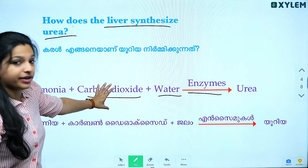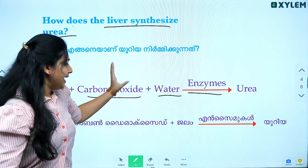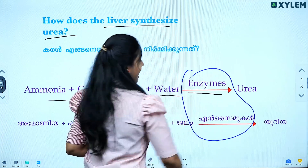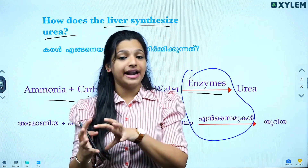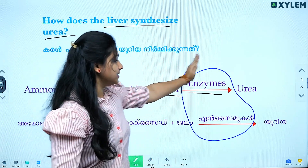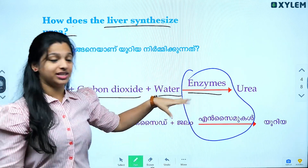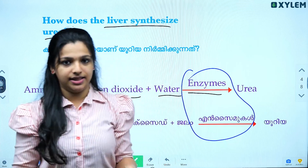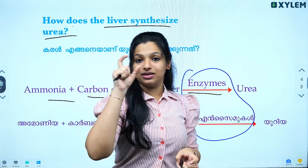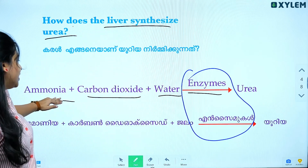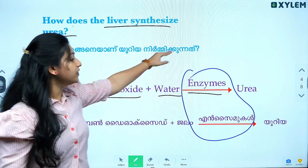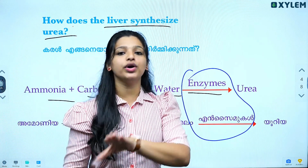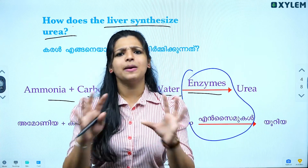One of the things you do is add carbon dioxide and water to ammonia. Carbon dioxide and water are combined with ammonia, and with the help of enzymes, they are converted into urea. Ammonia plus carbon dioxide plus water, with enzymes, gives urea. This is the simple equation. Urea formation is important for humans.